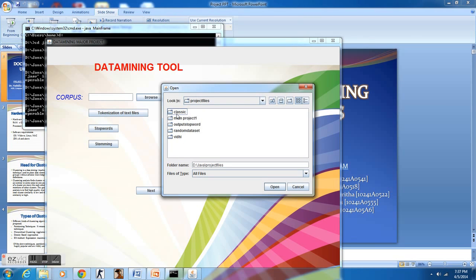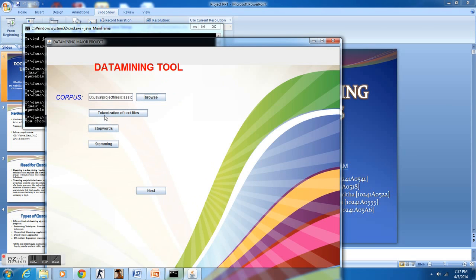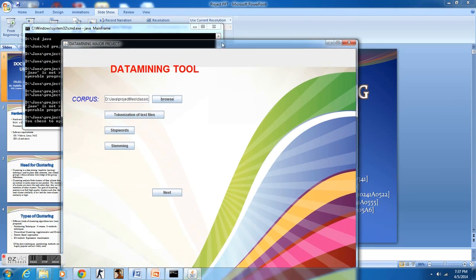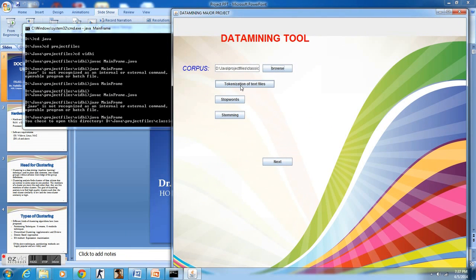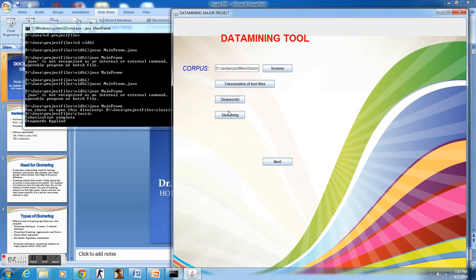Now, I shall browse from my folder D where I have stored the datasets which are already available. The project files folder contains this classic dataset which contains 800 documents which I shall choose for my initial clustering process. When I click on the tokenization button, the tokenization of text files happens. As we can see in the command prompt, the result has been displayed.